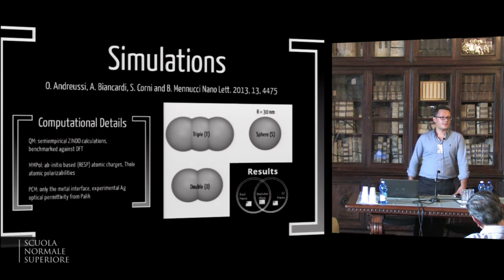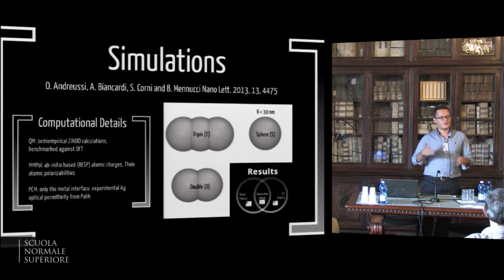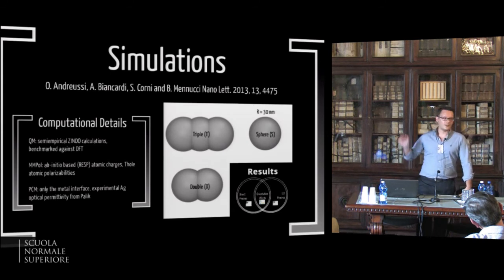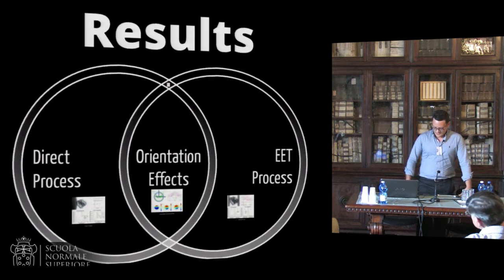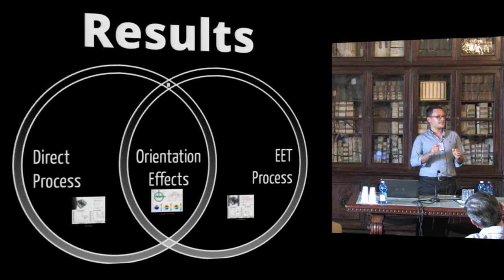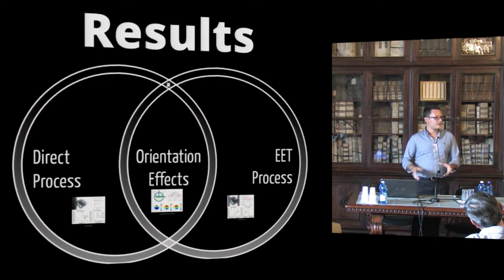This work recently appeared in Nano Letters. On the left there are some computational details: we basically treated three different kinds of metal aggregates — a simple sphere, and elongated aggregates — because these show different plasmonic properties. For the same reason we also studied combinations, meaning pairs of all the possible pairs from these three aggregate types. I will show results on the direct process and the EET process, first as a function of the distance between the protein and the surface, and then orientational effects for the simpler case of a single sphere aggregate.